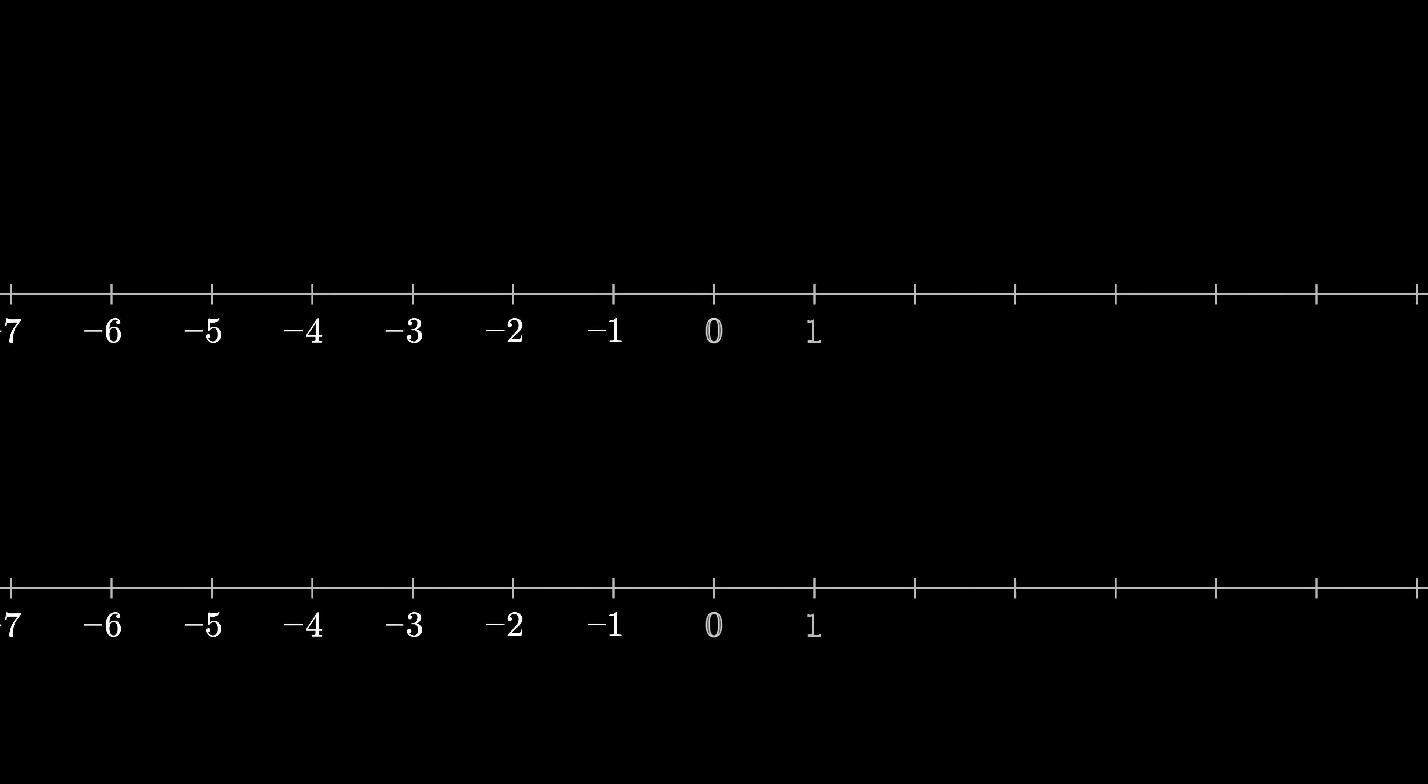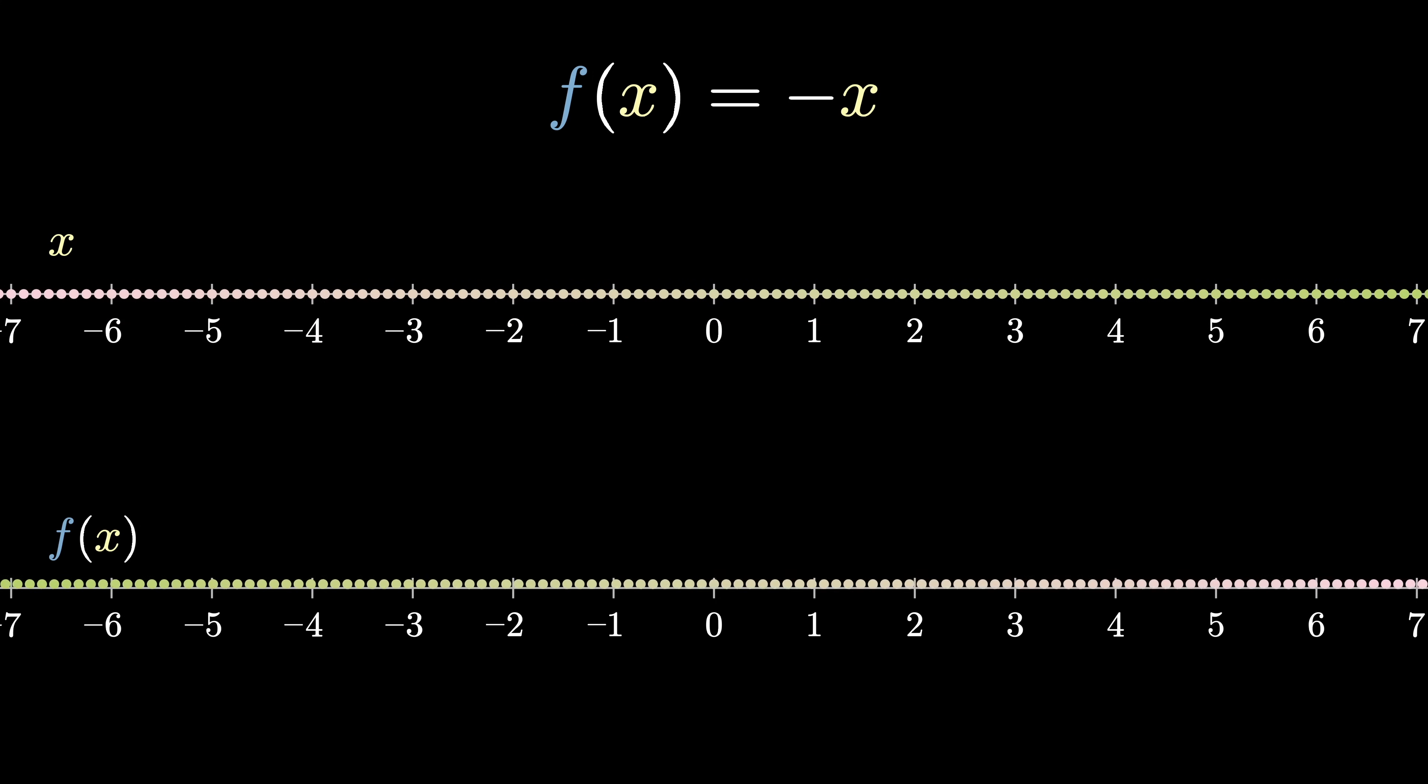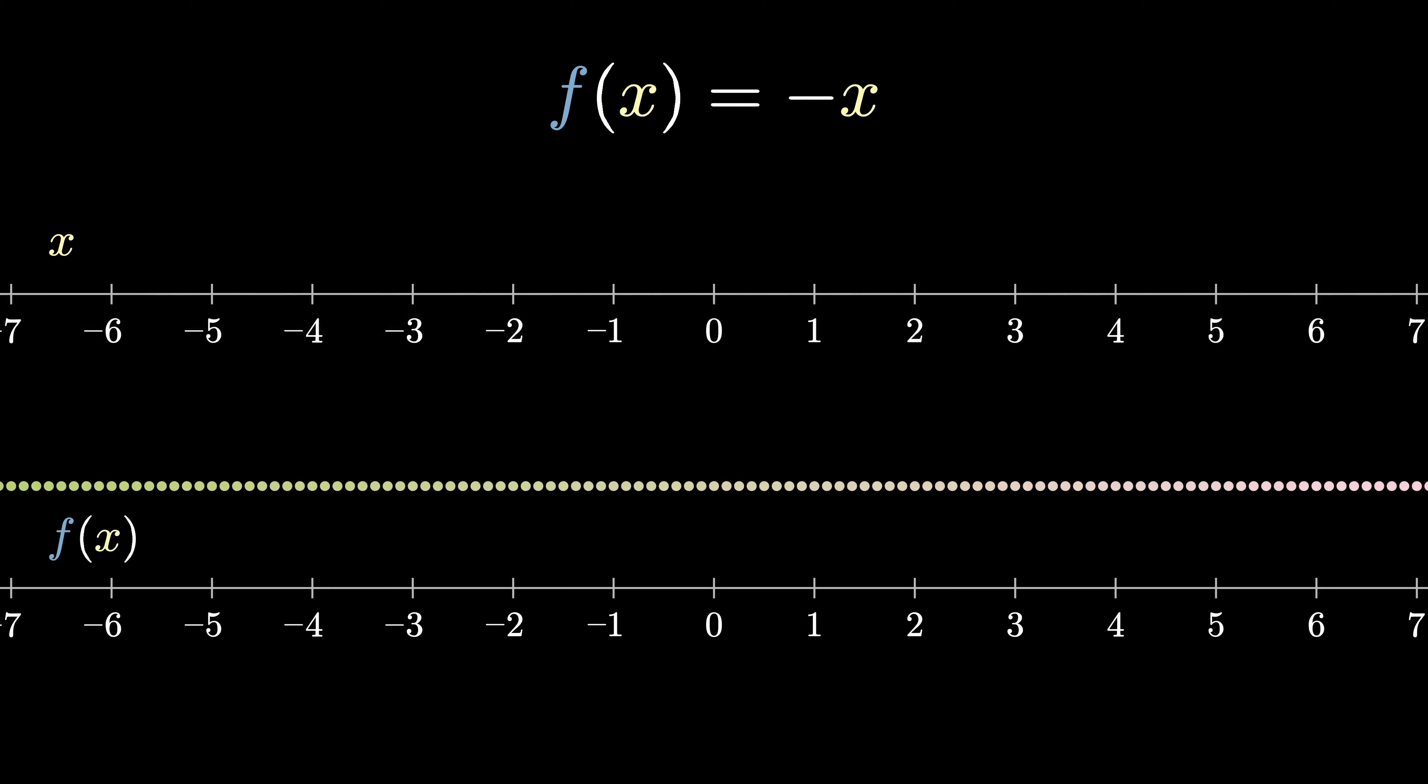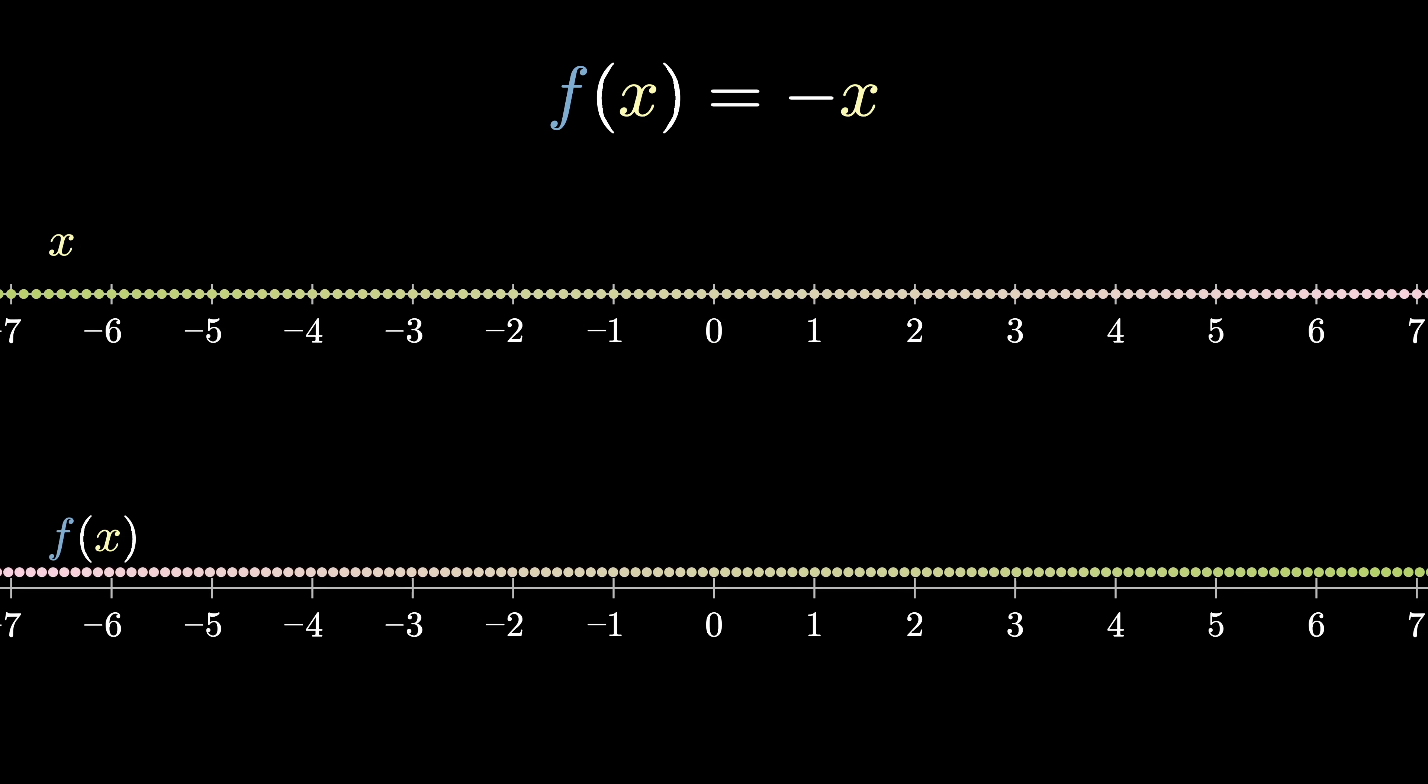Some common involutions over the real numbers include f(x) = -x and f(x) = 1/x. Here with f(x) = -x, notice how applying the function twice preserves the order of the colors. In other words, -(-x) is just x.